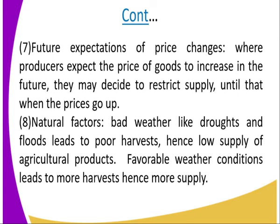Number seven is future expectations of price change. When producers expect the prices of goods to increase in the future, they may decide to restrict supply until the prices go up. This is what is referred to as hoarding of a commodity — they hoard the commodity in order for its price to rise, and this is why supply goes down in the market during the period of hoarding.